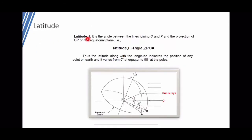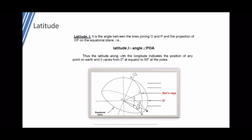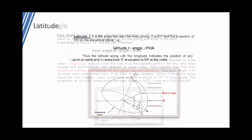Latitude is defined as the angle between the line joining the center of the earth (O) to a position P, and the projection of that line onto the equatorial plane. The latitude combined with longitude indicates the position of any point on earth, varying from 0 degrees at the equator to 90 degrees at the poles. The latitude determines how strong sunlight is at a given place on a given day.